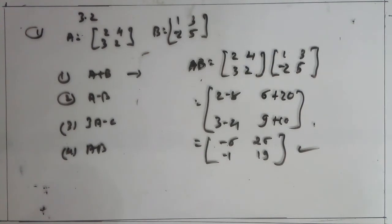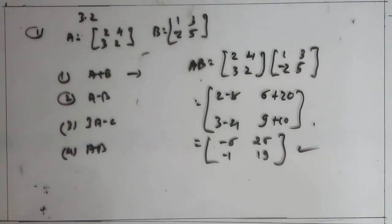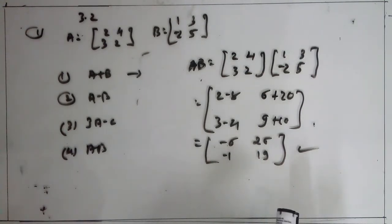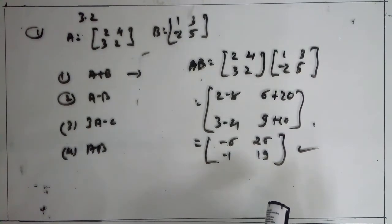Question number 5 is also easy. For given two matrices A and B, compute 3A minus 5B. First, multiply each entry of A with 3. And second, multiply each entry of the second matrix by minus 5, then take the addition.